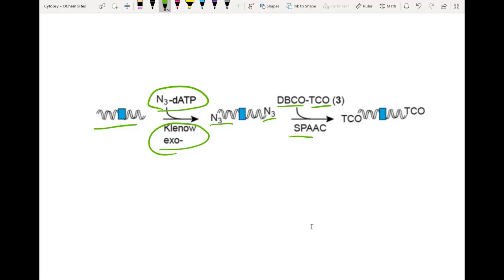For this method we use SPAAC which stands for strain promoted azide alkyne cycloaddition, which is a very efficient technique for bioconjugation of the cyclo-octene which is part of DBCO and an azide which we had previously attached to our DNA.